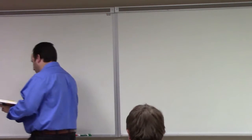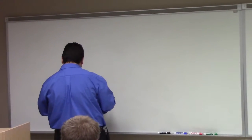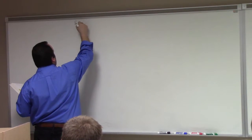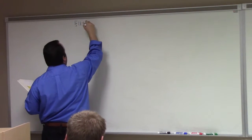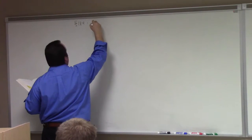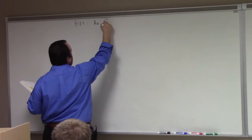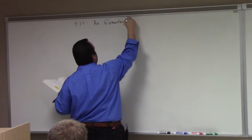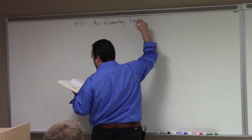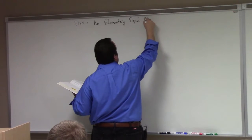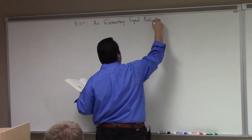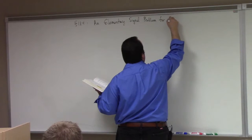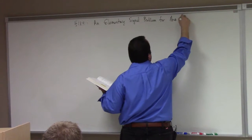This is the example that I was trying to do last time, but I muddled. So let me try it again. This is Section 13.4, and it's an elementary signal problem for the wave equation. The reason I'm going over this with you guys is it's completely within the scope of the mathematics we've covered, and it actually gives us a really interesting combination of calculational techniques — in particular, Laplace transforms and PDEs.